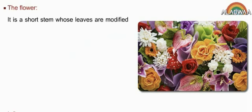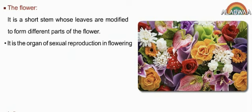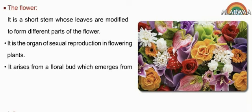The flower. It is a short stem whose leaves are modified to form different parts of the flower. It is the organ of sexual reproduction in flowering plants. It arises from a floral bud which emerges from the axil of a leaf called bract.